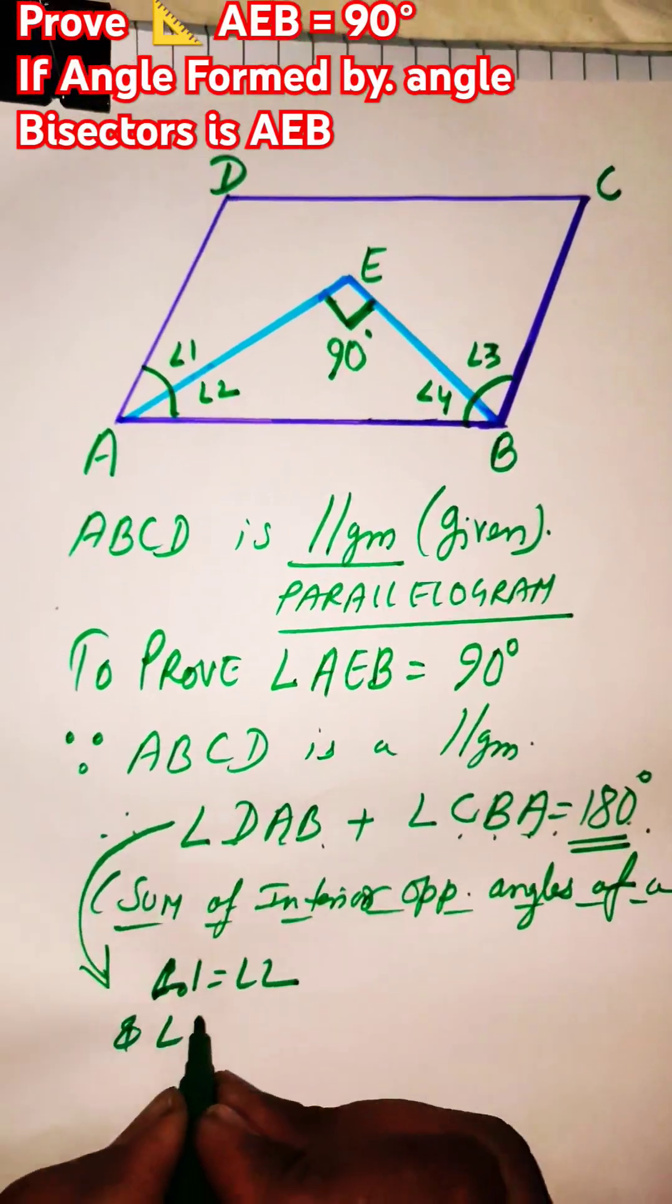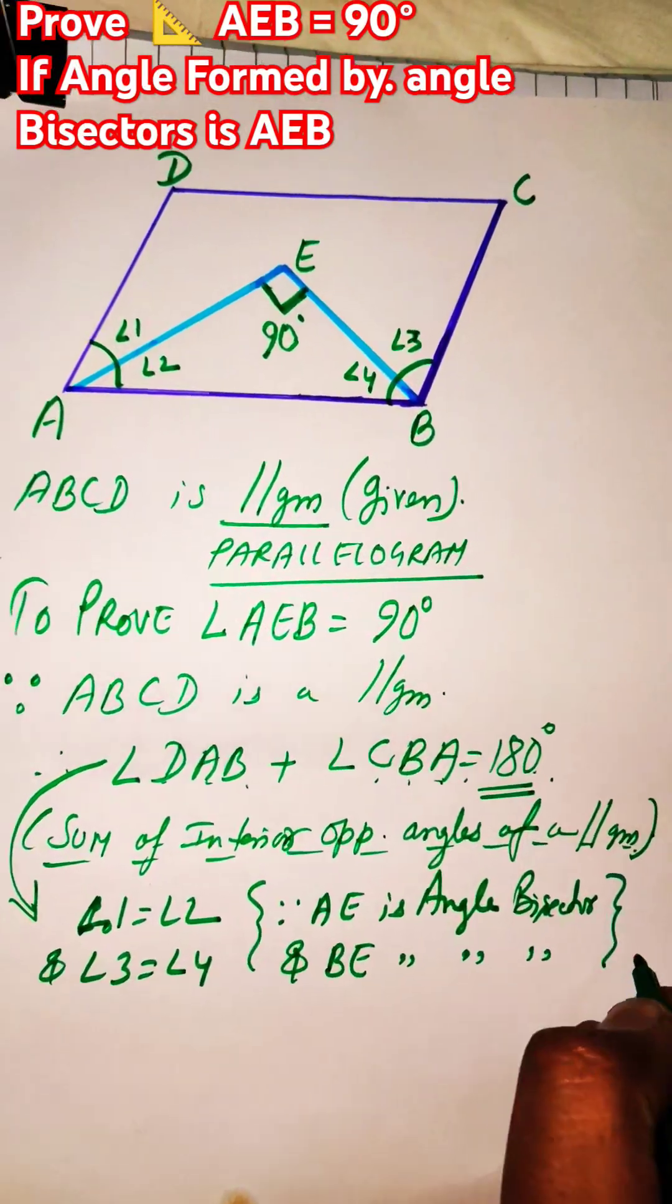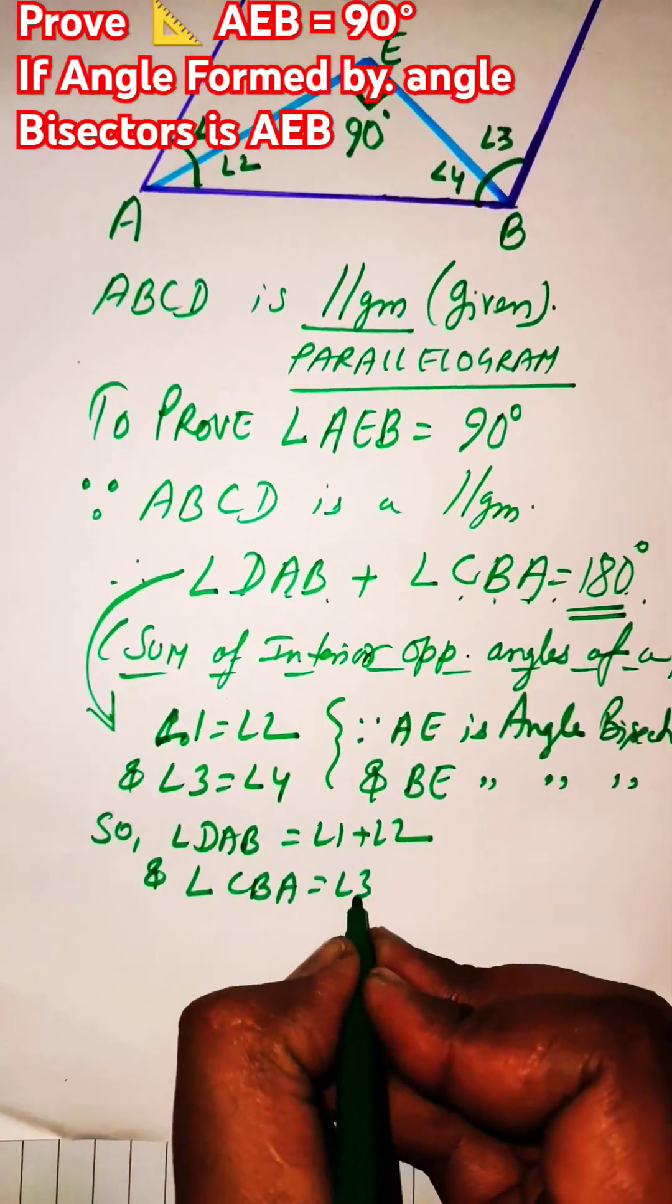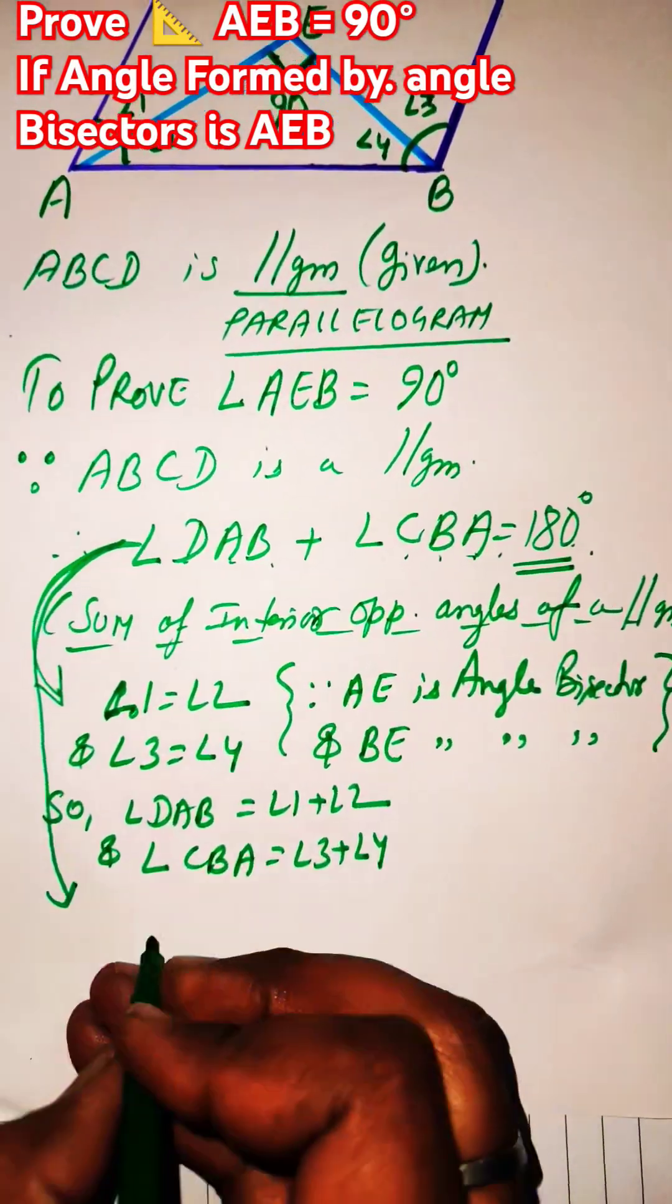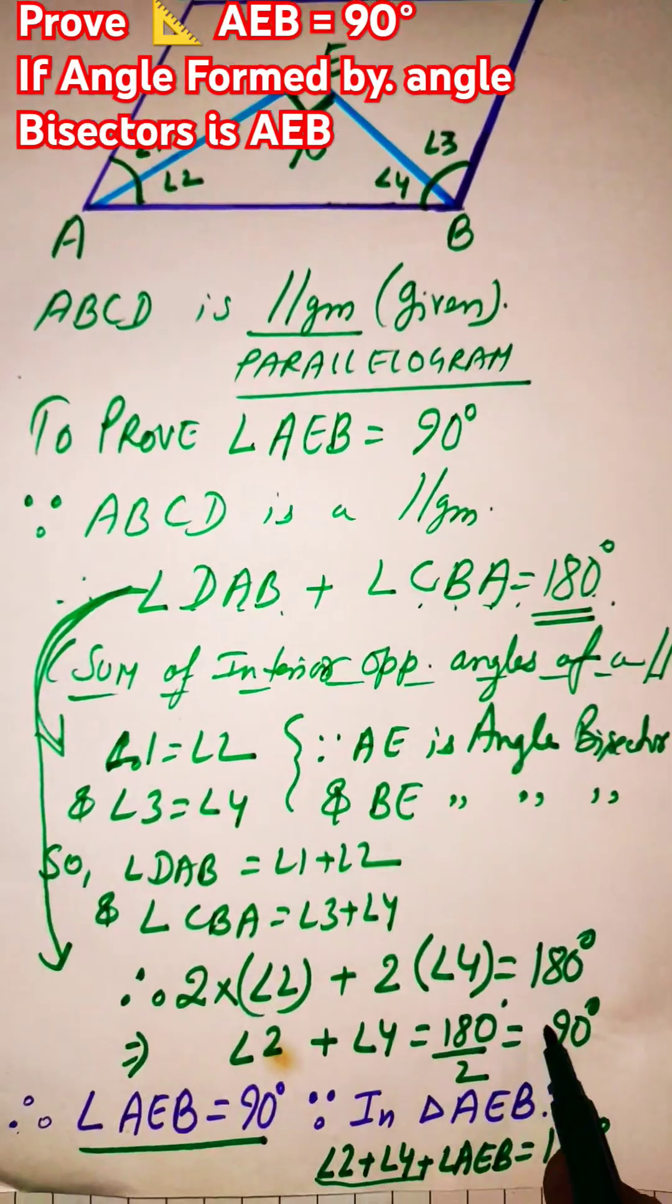Since AE is the bisector of A, we can say that angle 1 equals angle 2. Similarly, EB is the bisector of B, so we can say angle 3 equals angle 4. Putting up the value, we get angle 2 plus angle 4 as equal to 90 degrees. So angle AEB is 90 degrees since all the angles add up.